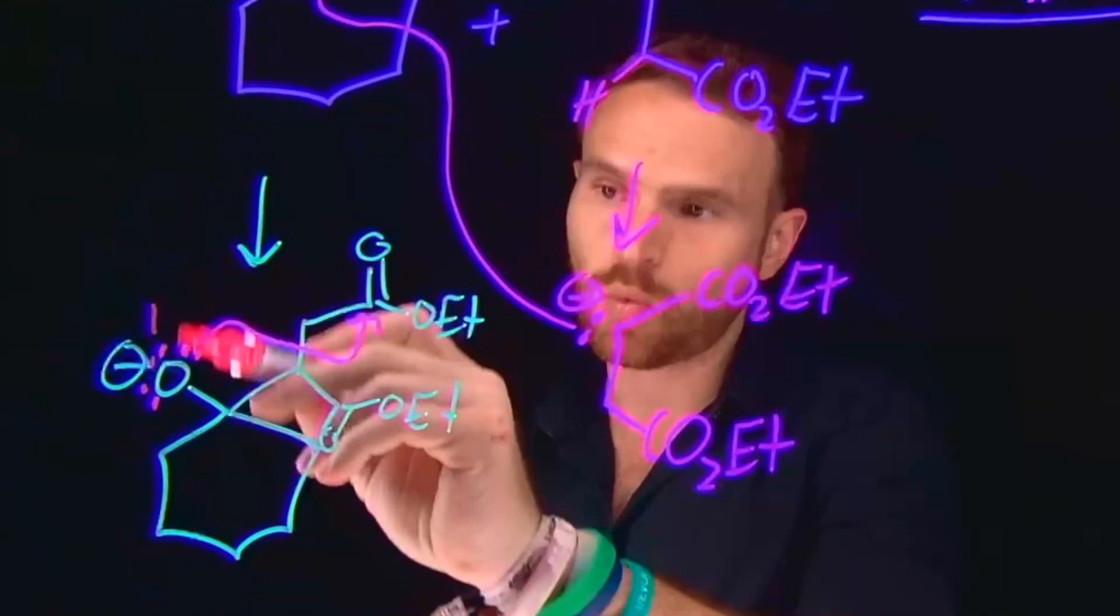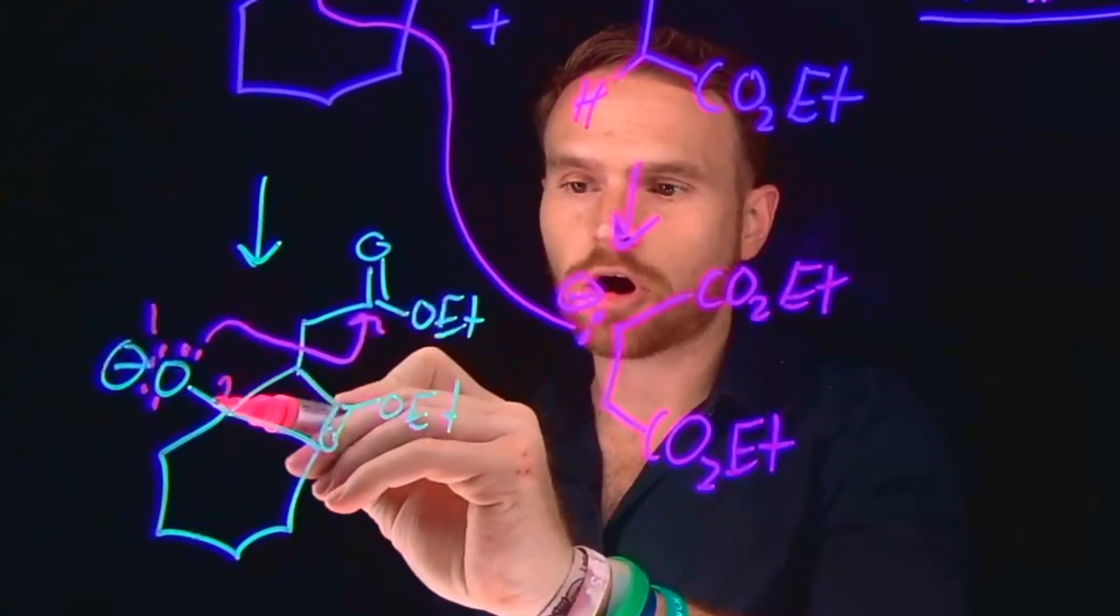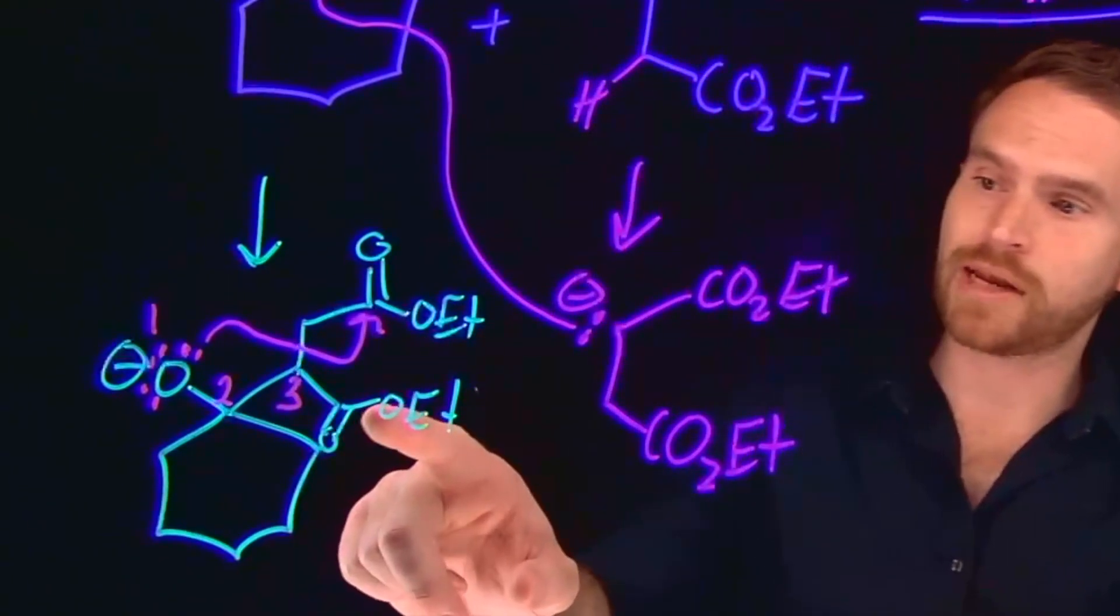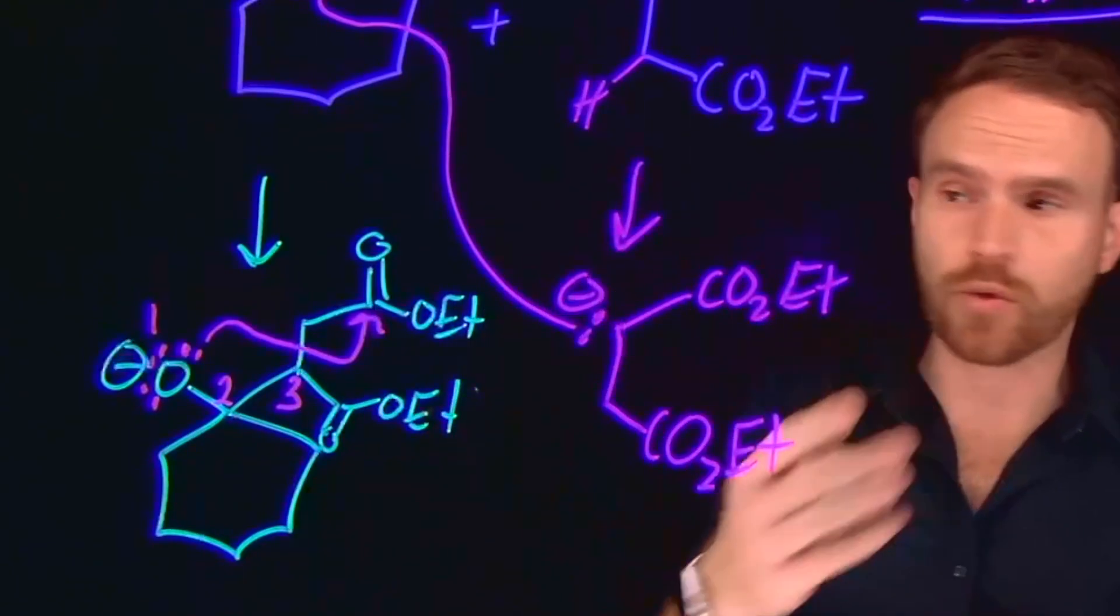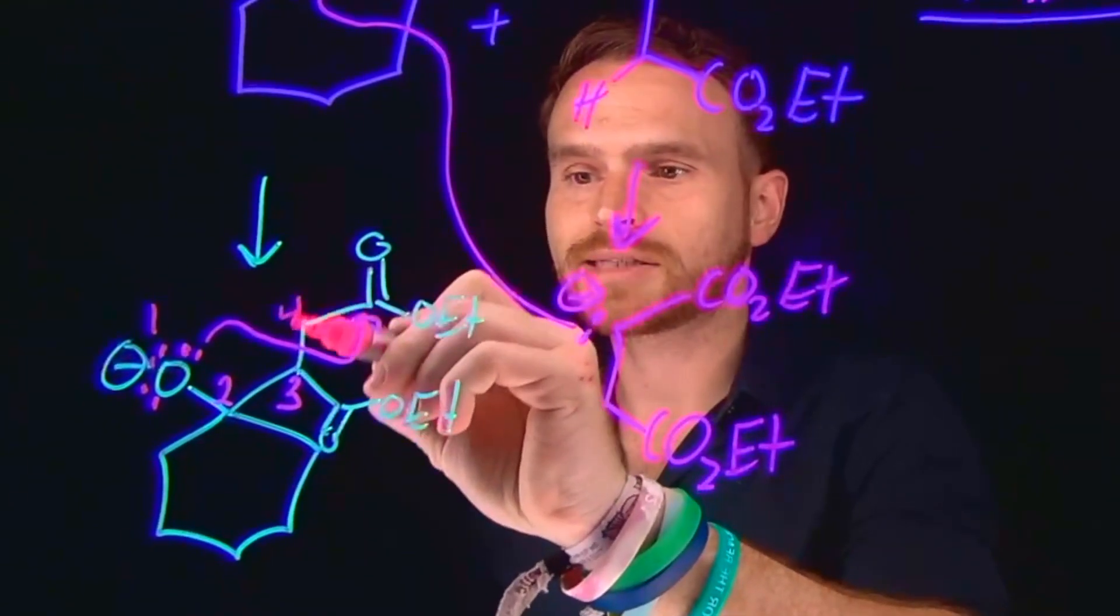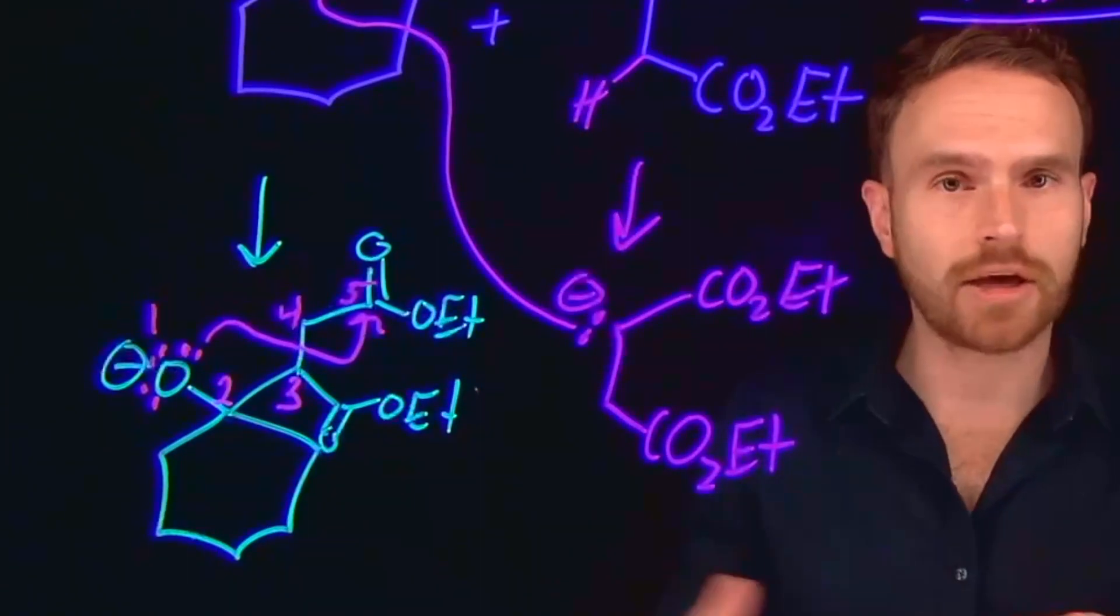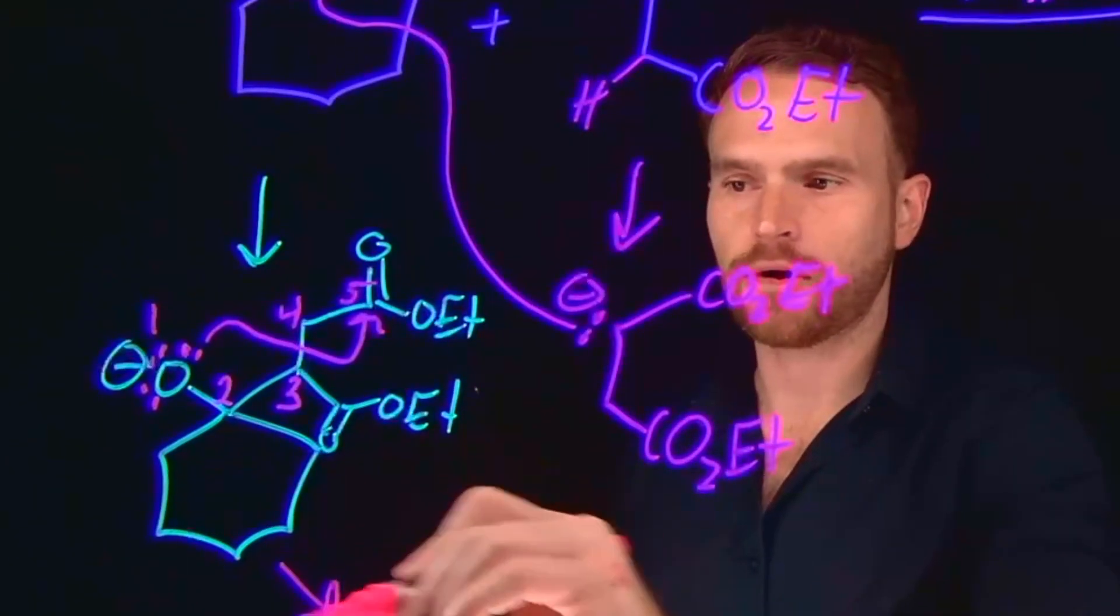Notice that this oxygen is position one. This carbon would be position two. This carbon would be position three. If it had attacked here, that would be a four-membered ring. But instead, it comes and attacks this other one because that would be the fifth atom away from that oxygen, giving us a five-membered ring as part of our next product.